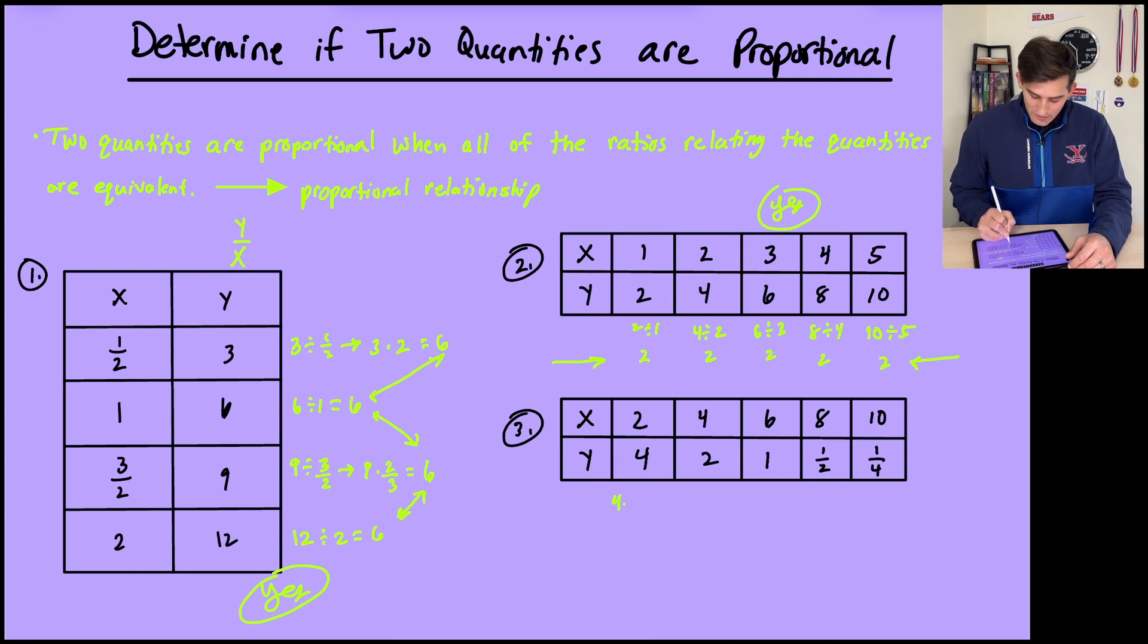So here we're going to do 4 divided by 2, so we get 2. So now going forward, when we divide, we should get a result of 2 if the quantities are proportional. Uh-oh. Now we're going to do 2 divided by 4, and that is 1/2. 1 divided by 6, and that's 1/6. 1/2 divided by 8, well, that would be 1/2 times 1 over 8, which is 1/16. And then 1/4 divided by 10, which would be 1/4 times 1 over 10, and that's 1 over 40.